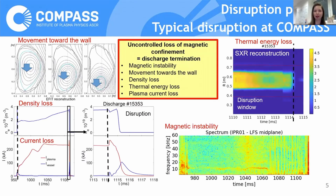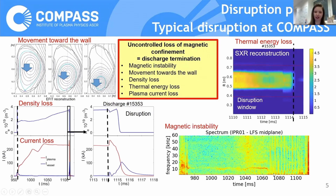This is an example of typical disruption at KOMPAS Tokamak. Disruption is an uncontrolled loss of magnetic confinement, which means discharge termination. It starts usually with magnetic instability, as you can see in this graph from the internal partial Rogowski coil, which is located here in the mid-plane. And at the end of the discharge, you see some magnetic oscillations.